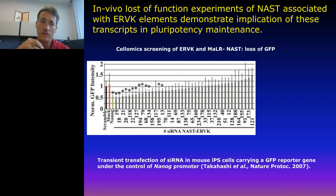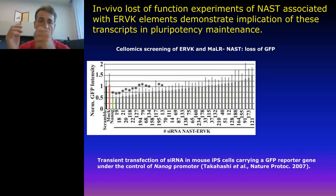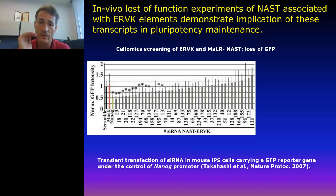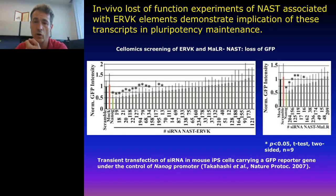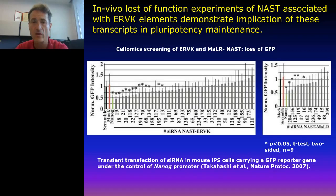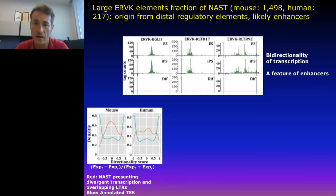The key point is to do experiments where we knock down those RNAs produced from ERVK elements — for about one third of them we see that cells tend to differentiate into something else. We measure GFP fluorescence and see that the cells become less green when you knock down those RNAs, so those NeST RNAs are important for keeping iPS conditions. If you knock down the NEST-MALR elements, we also see a decrease of stemness. So those RNAs are essential for maintaining the pluripotent state.